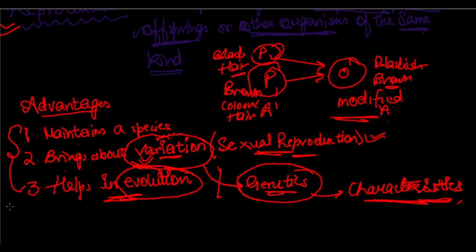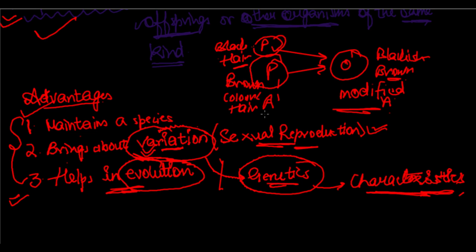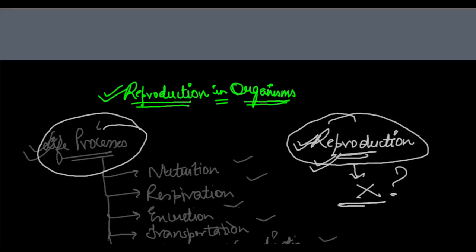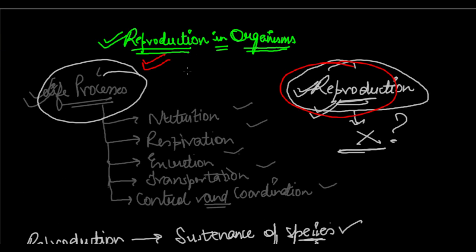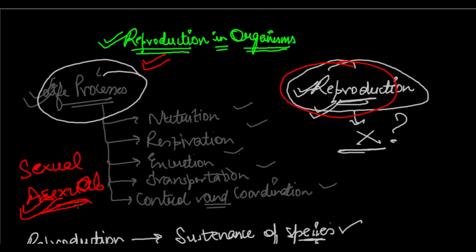These are the three main important advantages of reproduction and why reproduction should be carried out. If you get a question on the importance of reproduction, define reproduction and give a few of its advantages for a complete answer. With this, we conclude this introduction to reproduction. In the next video, we will be discussing the differences between sexual and asexual reproduction. Thank you very much for joining me. Goodbye — stay healthy, stay smart, and keep studying.